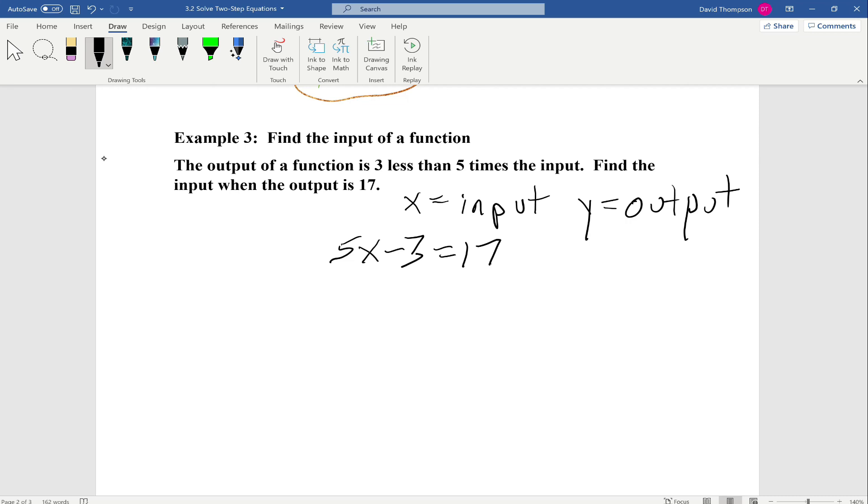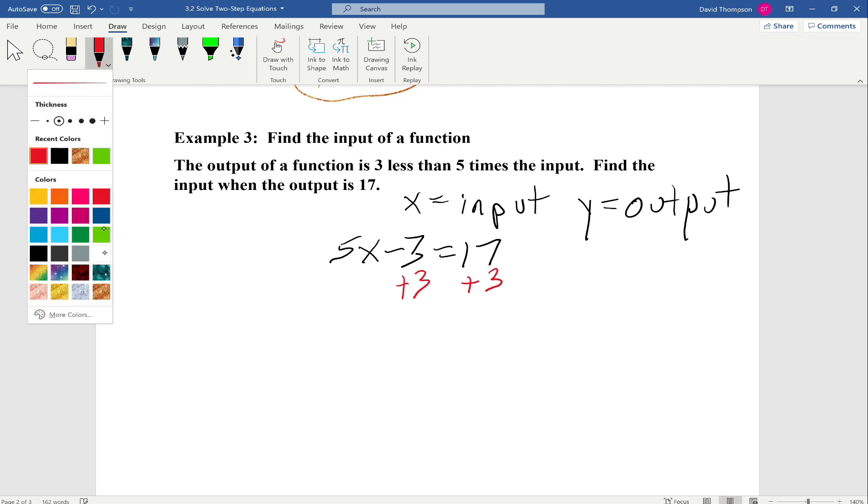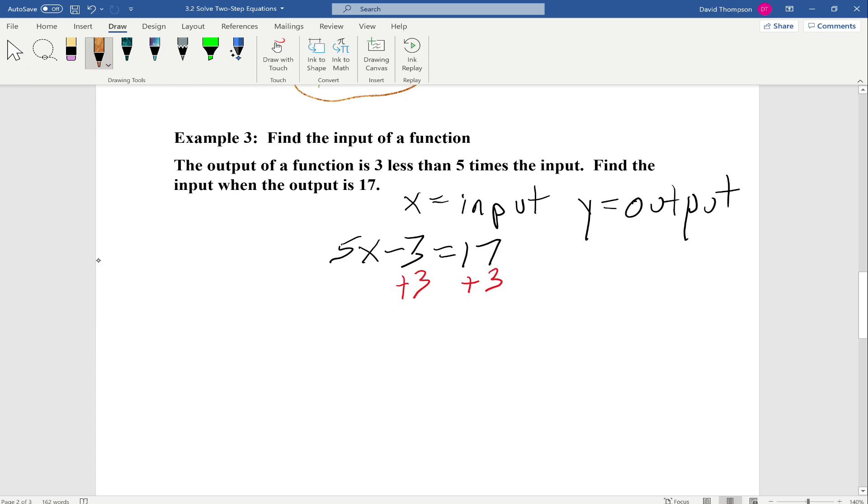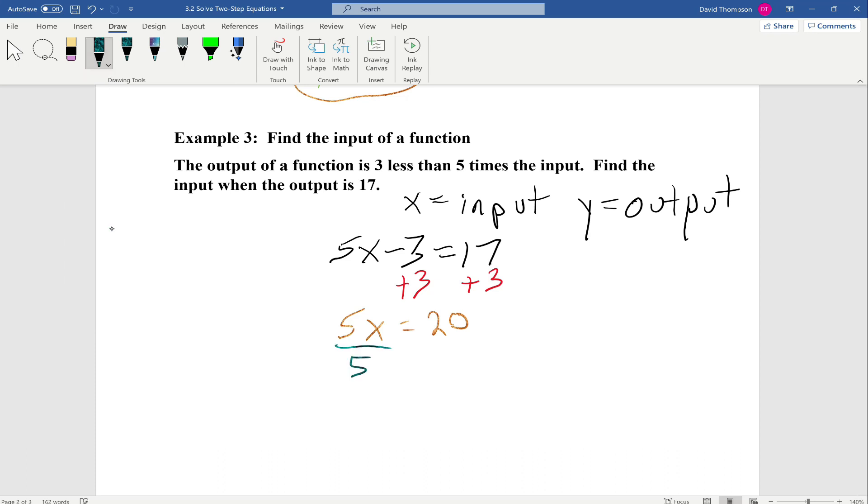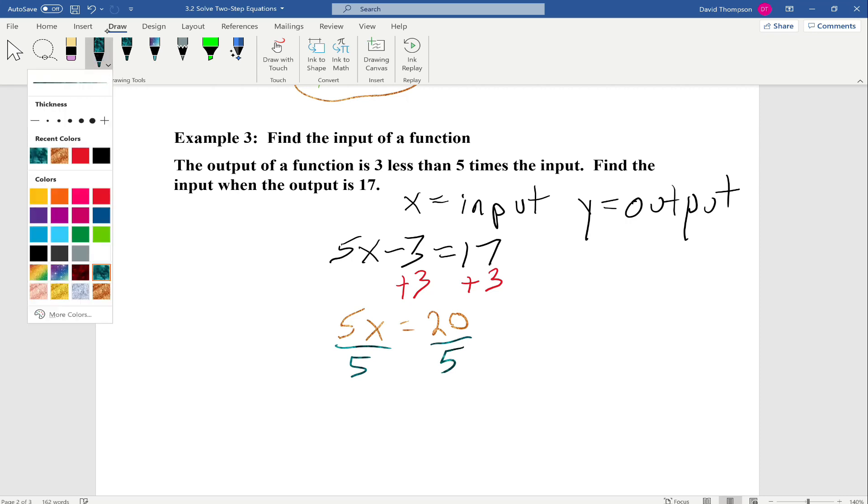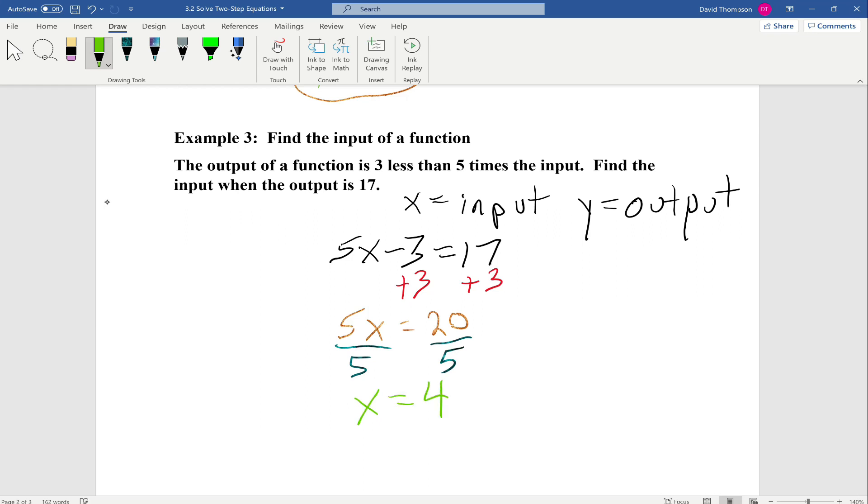We're going to start solving our equation. The first thing we're going to do is we're going to add three to both sides. So we'll be left with 5x equals 17 plus 3 is 20. And our last step we're going to divide both sides by 5. And 20 divided by 5 is 4, so x equals 4. So our input is 4.